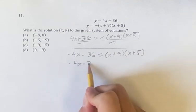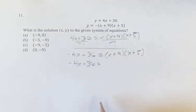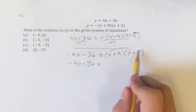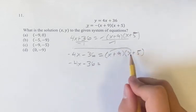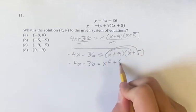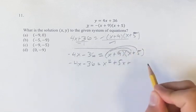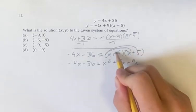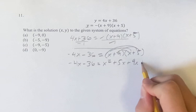Leaving this side alone for a second, we get negative 4x minus 36 is equal to this foiled out. Multiplying both of these by both of these will give us four terms, so we have x times x is x squared, plus x times 5 is 5x. Here, 9 times x is 9x, plus 9 times 5 which is 45.